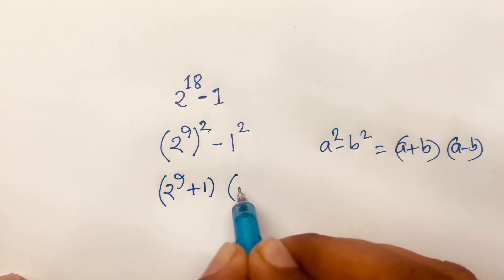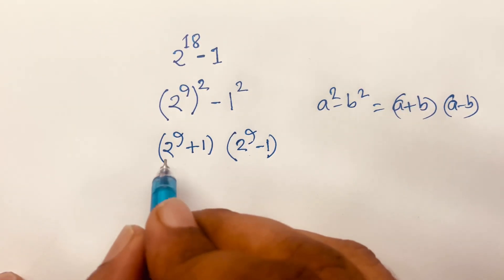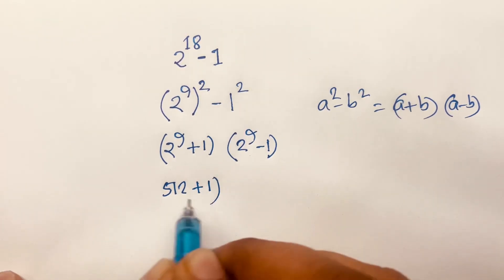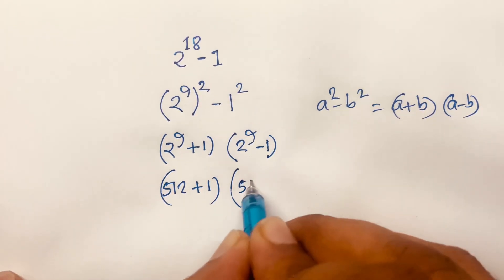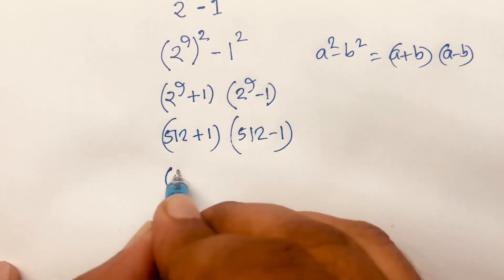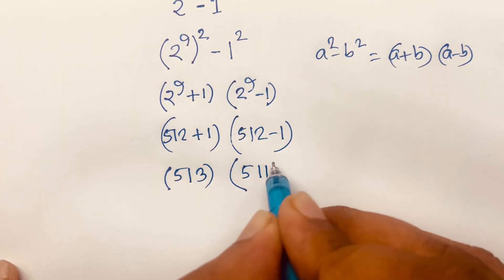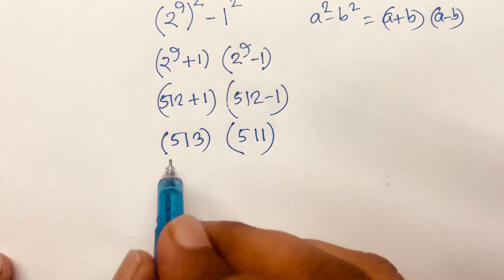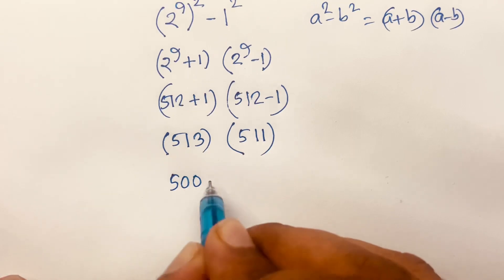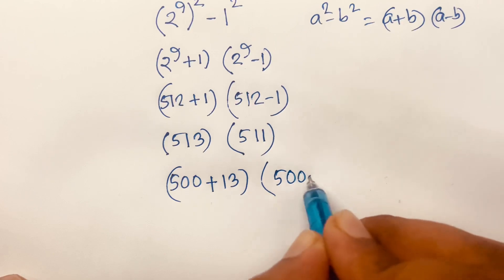Then I can say 2 to the power 9 equals 512. So this becomes 512 plus 1, times 512 minus 1, which gives us 513 times 511. Then I can write 513 as 500 plus 13, times 500 plus 11.